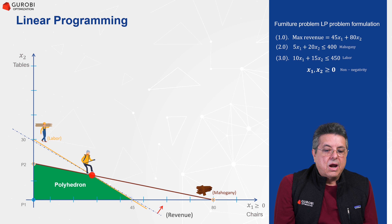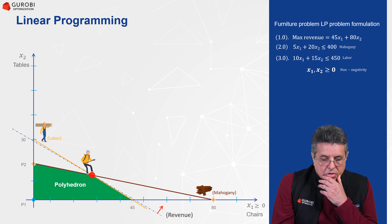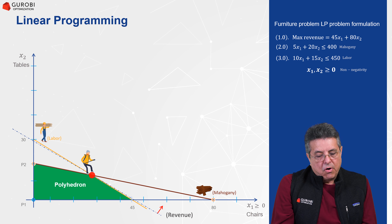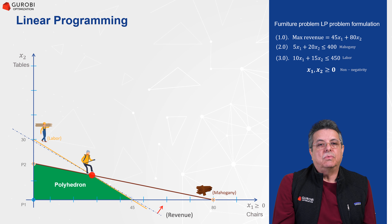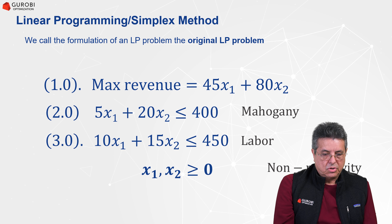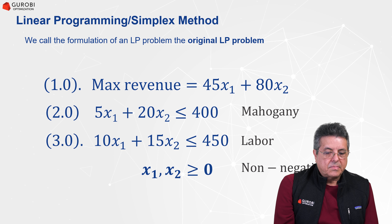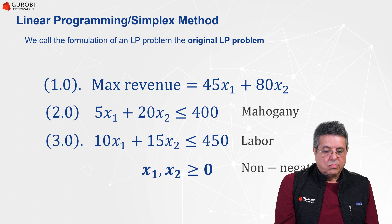We declared that at that point the solution was optimal because we couldn't increase the revenue anymore. Now let's see how we can follow these same ideas but using algebra to generate each of these points. The formulation of the furniture problem, we are going to call the original linear programming problem. What we wanted to do was to maximize the total revenue.